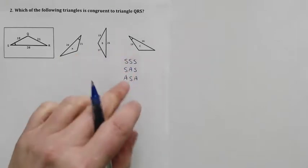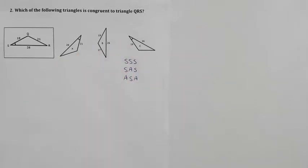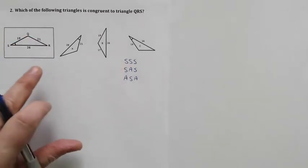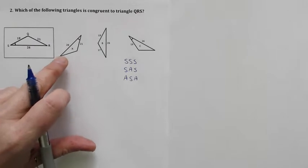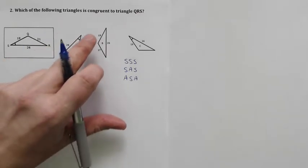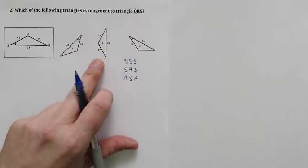Those will be minimum conditions for saying that the triangles are congruent. I have three known sides on my QRS, so SSS. I'm going to take a look. The problem here is that for triangle A I don't have all three sides.